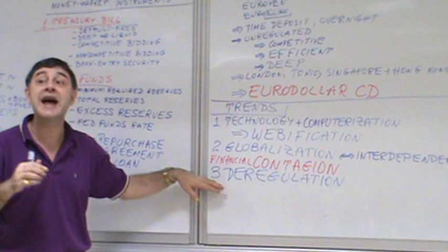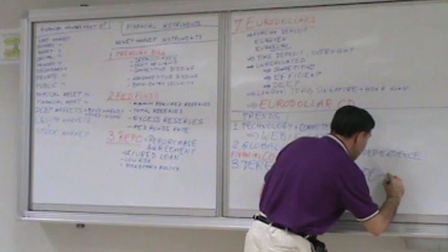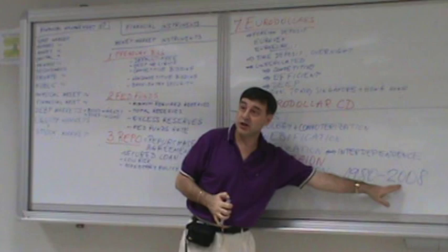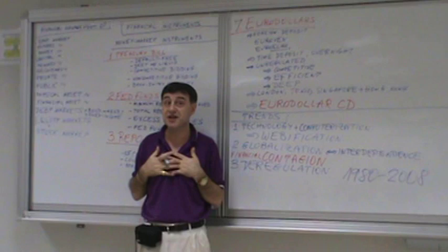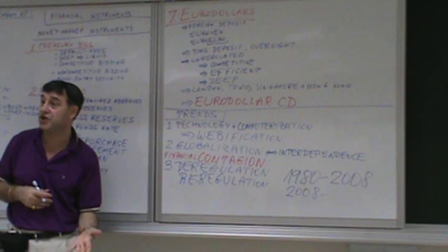And now it appears, because it's been only two or three years and we can't say for sure, that deregulation now from nineteen eighty until two thousand eight, that's the global financial crisis, it appears that the latest trend is of re-regulation, which is a trend of regulating more or reintroducing more regulation in the market. Re-regulation is increasing regulation in financial markets.